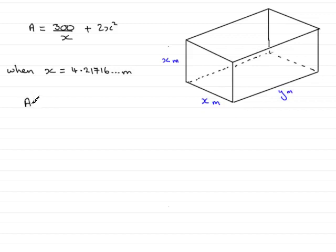substitute this into the equation that we proved earlier for the surface area A in terms of x. So it's just going to be A equals 300 divided by x, that is 4.21716 and so on, and then plus 2 times 4.21716 and so on squared.